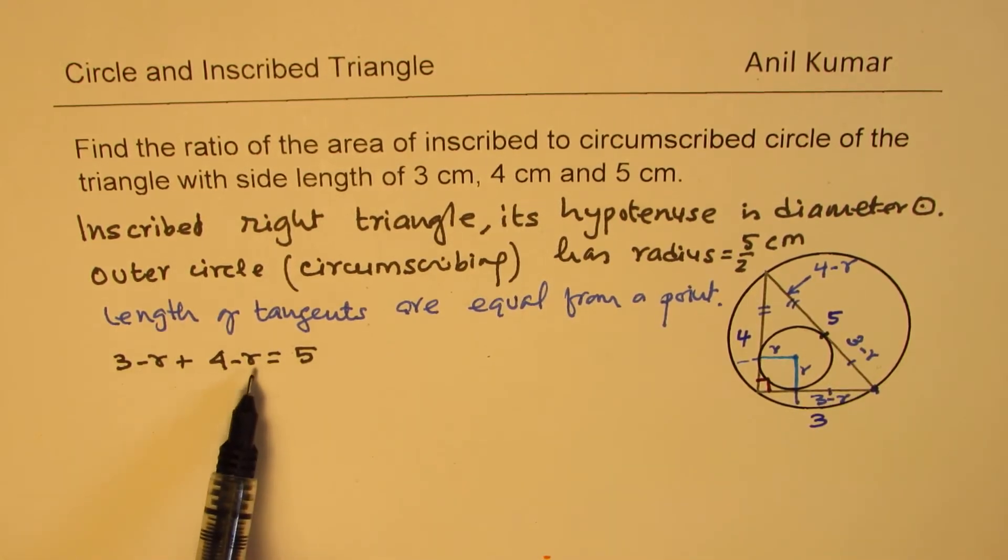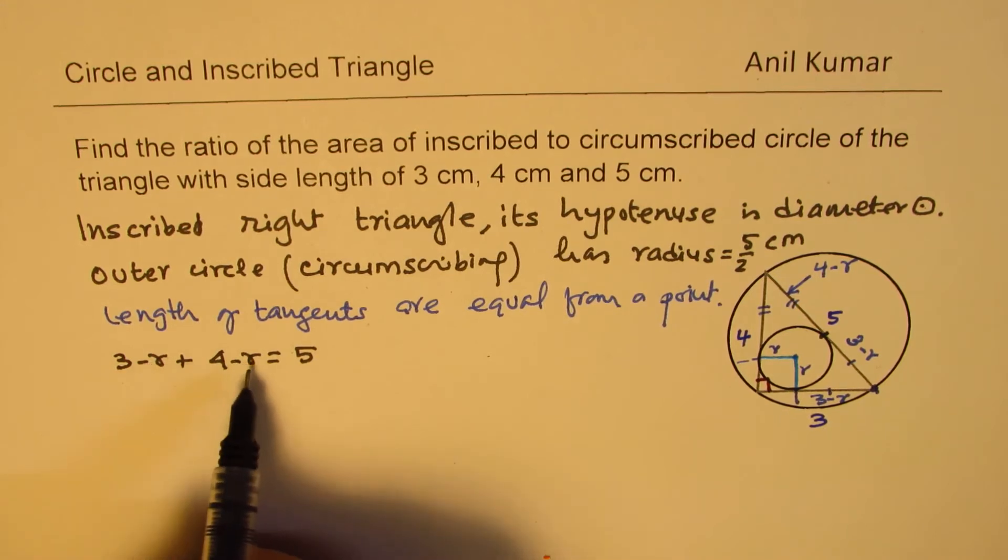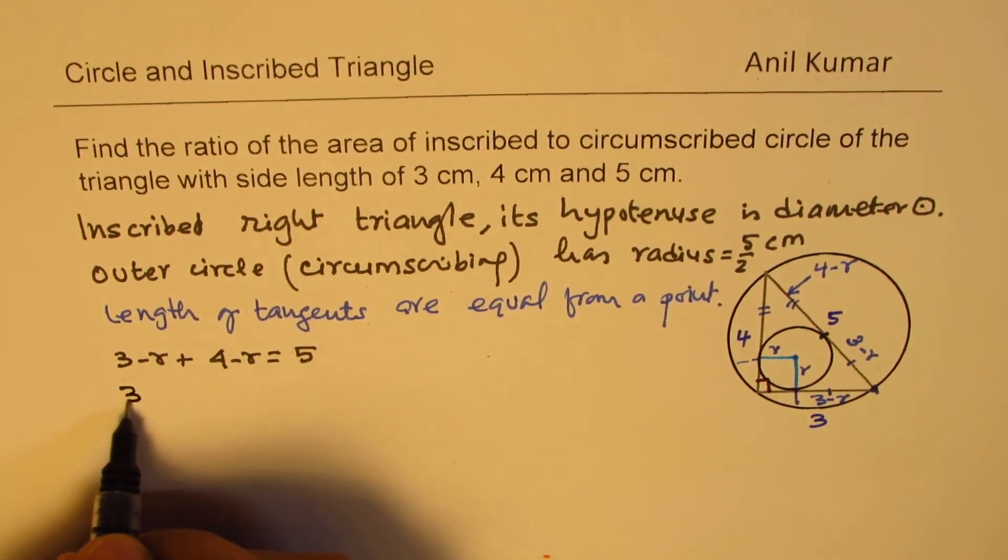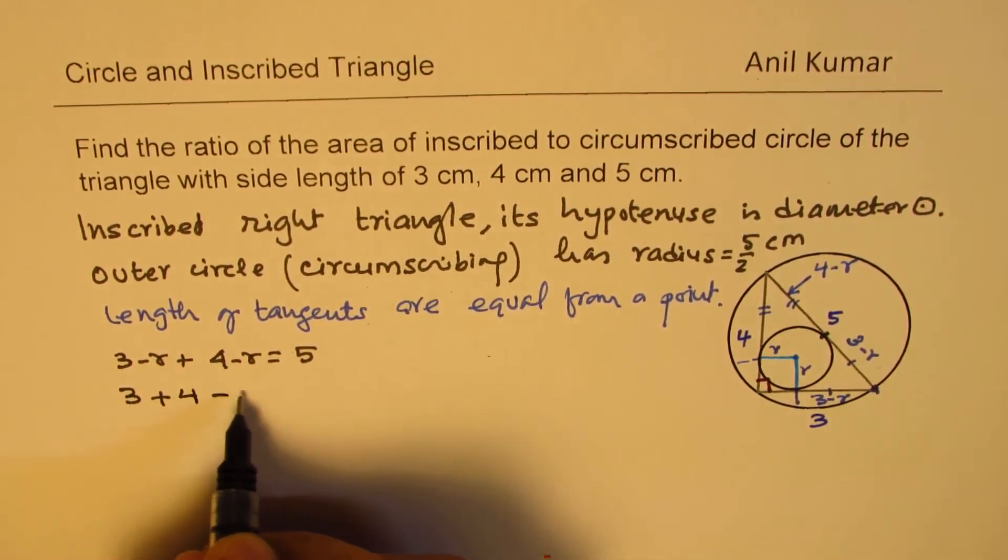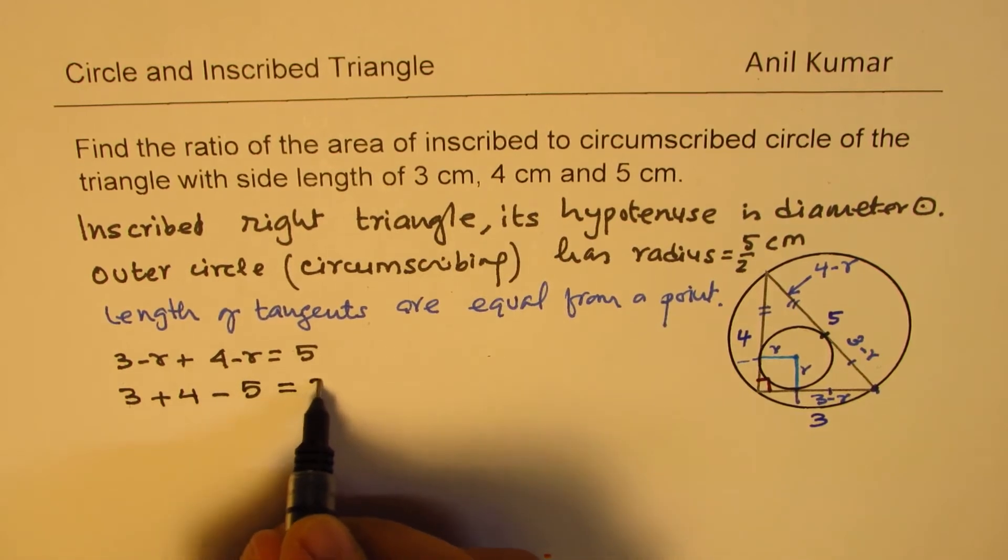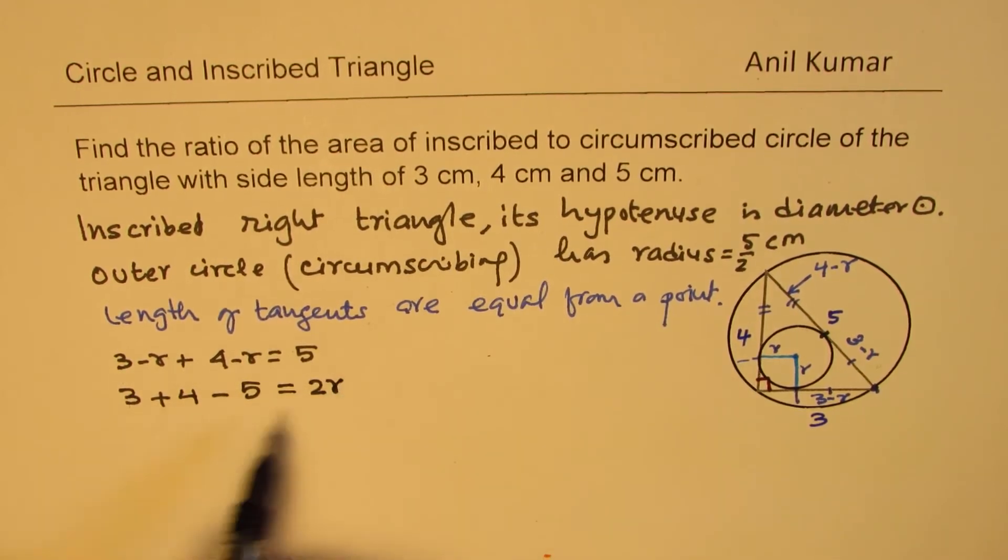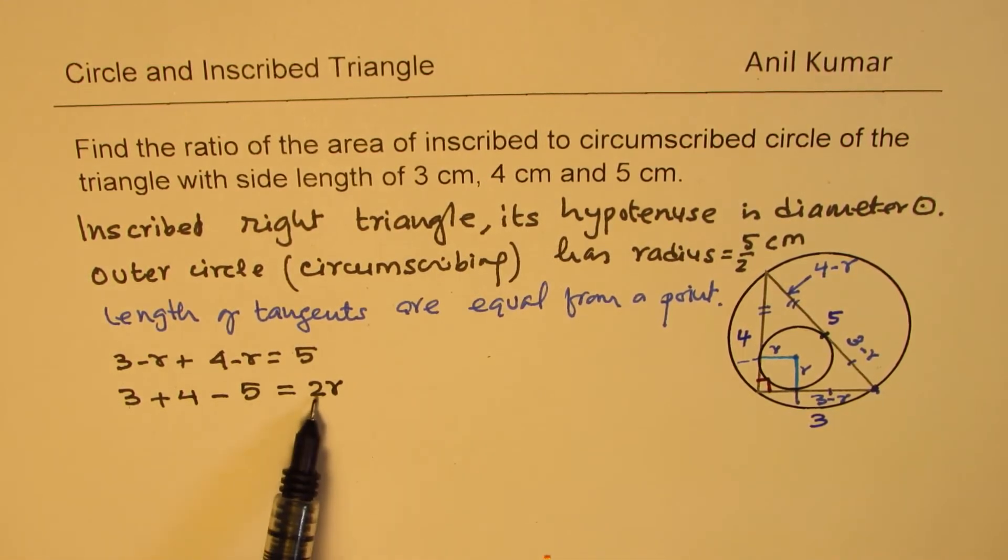So we can find the value of r from here. So 2r, we will take it on this side. So we get 3 plus 4 minus 5 equals to 2r. Now that is also a standard formula, which you can always use. So you can see 2 legs minus the hypotenuse divided by 2.